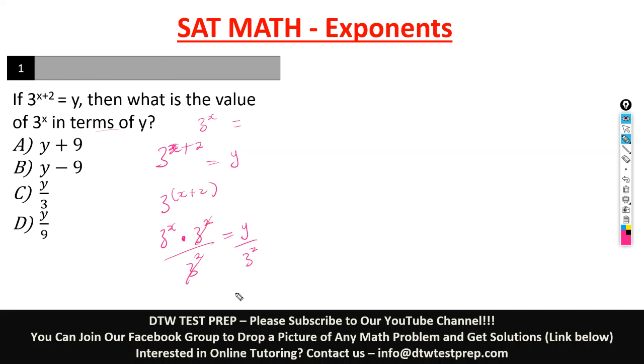So this would cancel out, and we're left here with 3 raised to power x is equal to y. What is 3 raised to power 2? That would give us 9. So over 9. So this will be our answer. So this will be the value of 3^x in terms of y. So our right option here is option D.